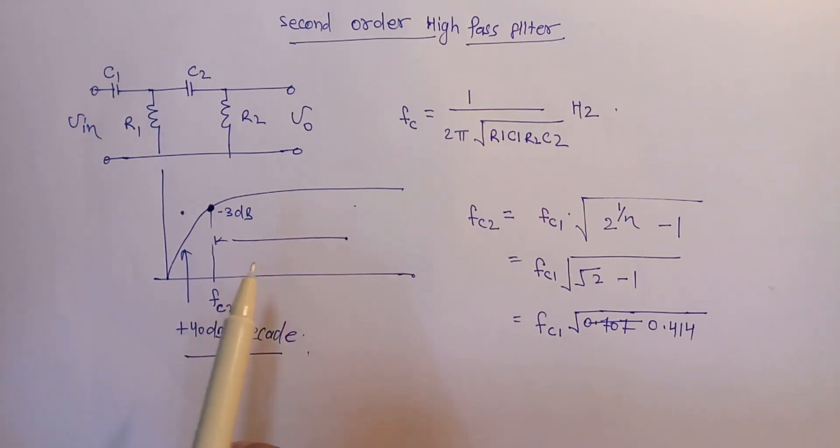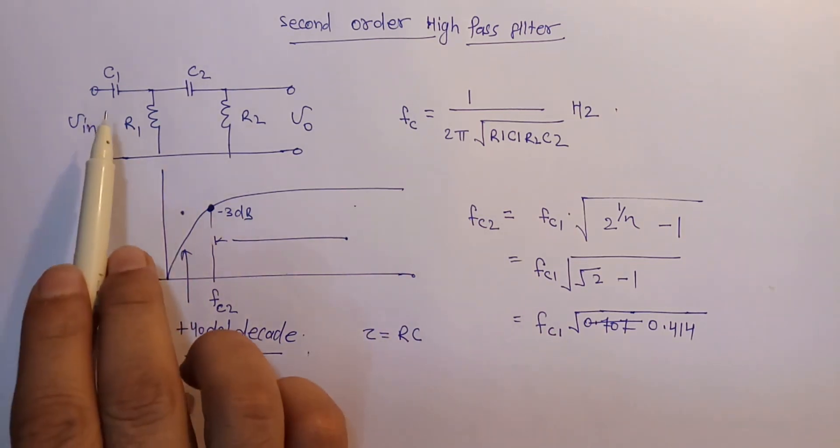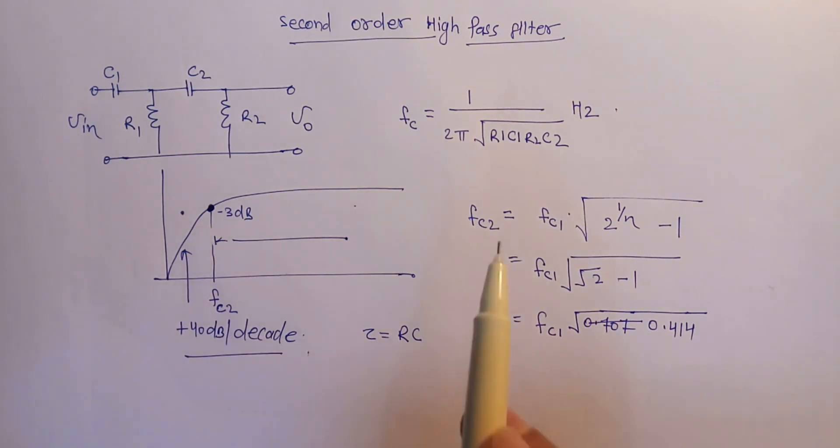The output voltage V out also depends on the time constant tau equals RC. The time constant is the time which takes the charging and the discharging of the capacitor here, and it can also be shown as tau is equal to 1 upon 2 pi F. So if we take these two equations together, we will get F is equal to 1 upon